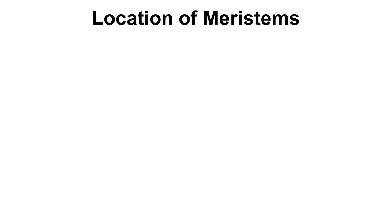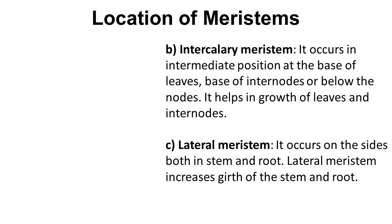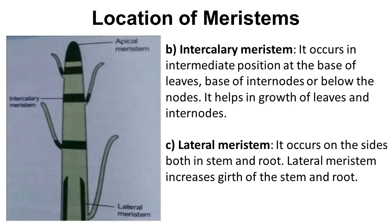Intercalary meristematic cells are present at the base of leaves, base of internodes, or below the nodes. They help in the growth of leaves and internodes. Lateral meristem is present on the sides of both the stem and root and is mainly responsible for the girth of the stem and root. The lateral meristematic tissue causes the diameter of the plant to increase as it grows — from a thin seedling to a large tree. You can see the intercalary meristem at the base of leaves and lateral meristem on the sides of the root and stem.